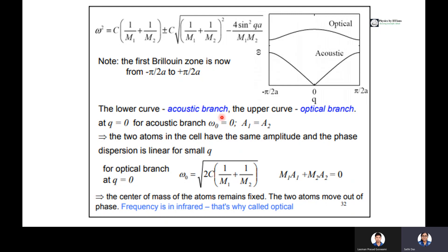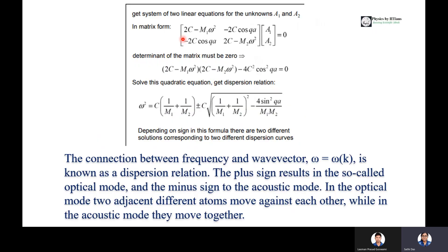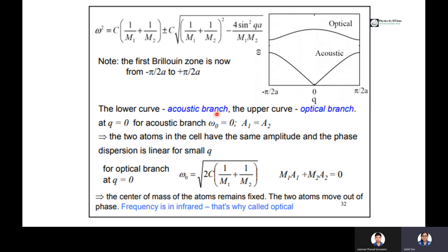The lower curve is the acoustic branch and the upper curve is the optical branch. At q equals 0 for the acoustic branch, ω equals 0. Then A1 will equal A2, meaning the amplitude of the two atoms in the cell will be the same or equal, and the phase dispersion is linear for small q.